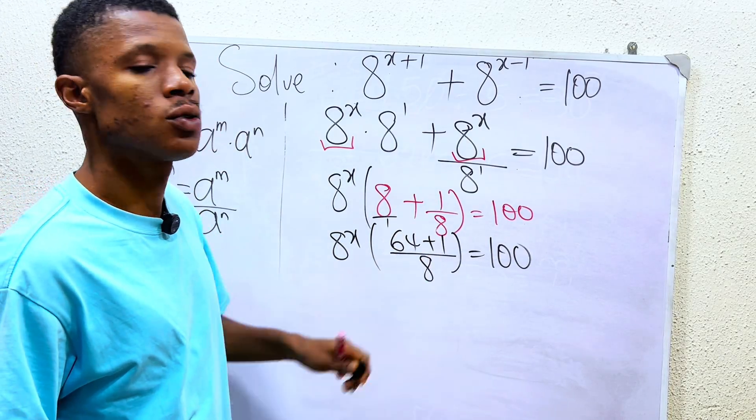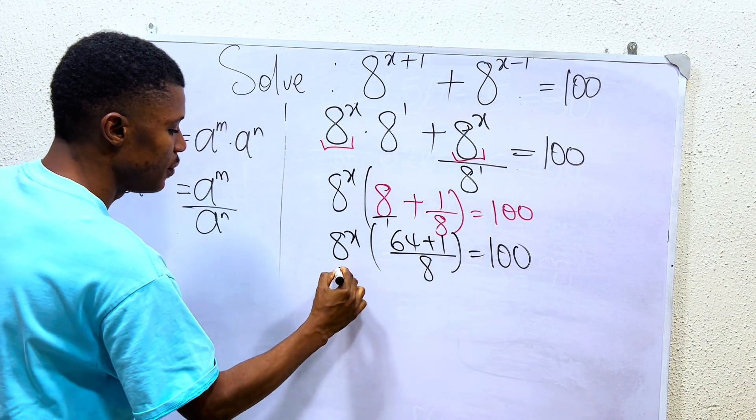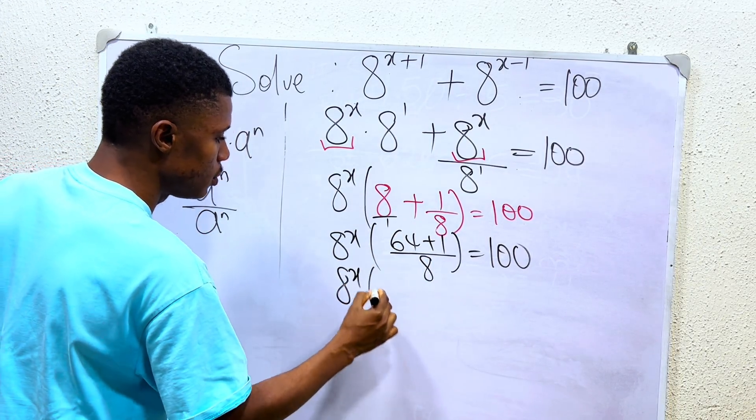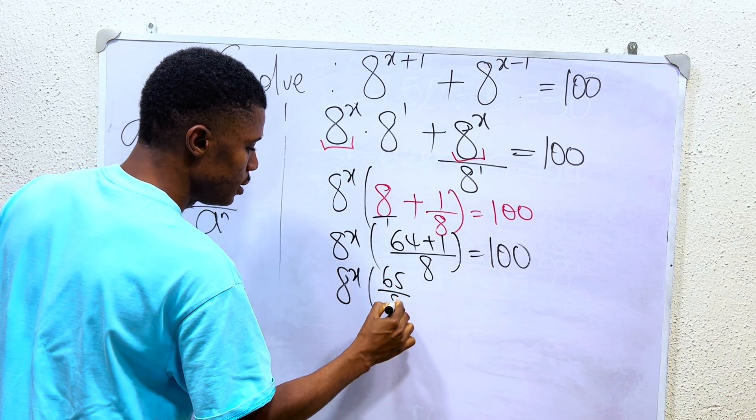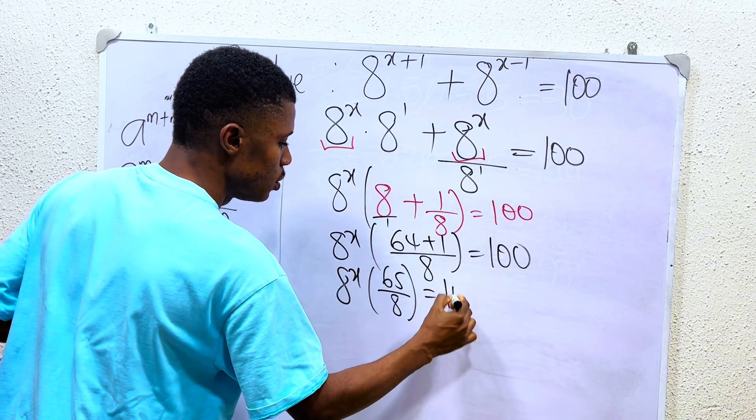So what do you have? 64 plus 1 is 65. You have it as 8 power of x into 65 over 8 equals 100.